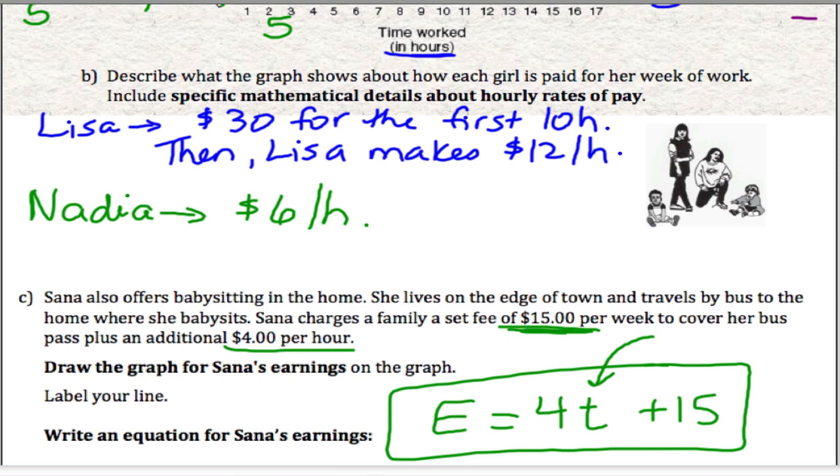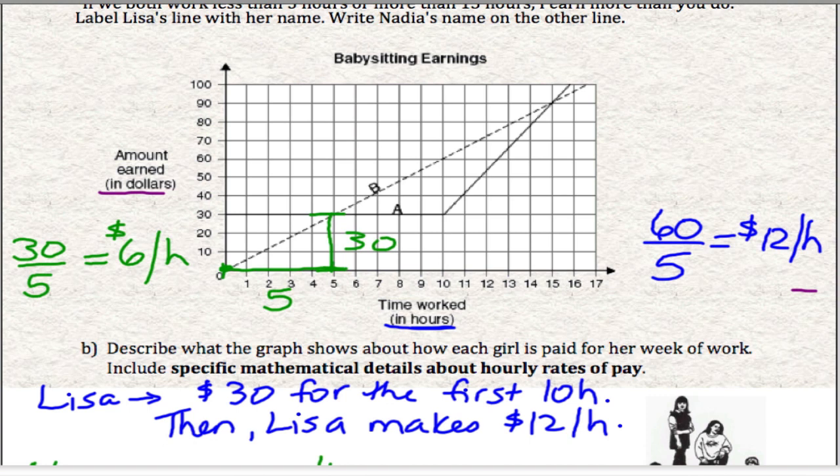If we want to go up and put that on the graph, she starts at $15. So that means Santa's line has an initial value of $15. So it would start here. Okay, halfway in between 10 and 20.